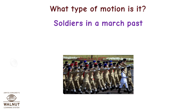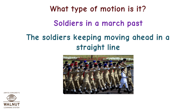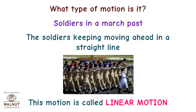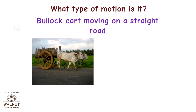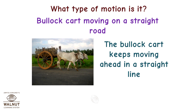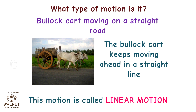What type of motion is it? Soldiers in a March Past — the soldiers keep moving ahead in a straight line. This motion is called Linear Motion. Bullock Cart Moving on a Straight Road — the bullock cart keeps moving ahead in a straight line. This motion is called Linear Motion.